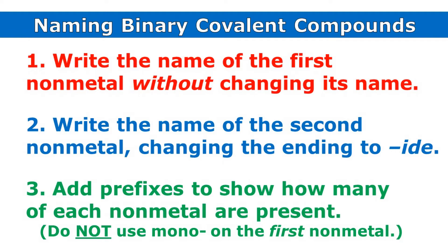Just like we did in an ionic compound, and then finally we add prefixes to show how many of each non-metal are present, but we don't use the prefix mono on the first non-metal.